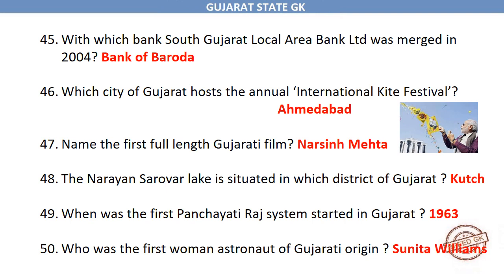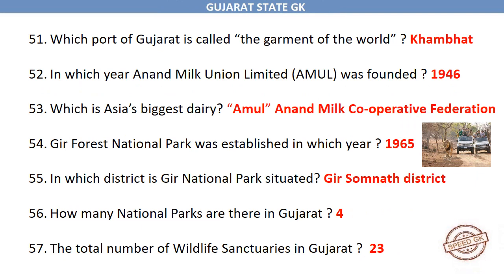Who was the first woman astronaut of Gujarati origin? Sunita Williams. Which port of Gujarat is called the garment of the world? Khambhat. In which year was Anand Milk Union Limited, Amul, founded? 1946. Which is Asia's biggest dairy? Amul Anand Milk Cooperative Federation.